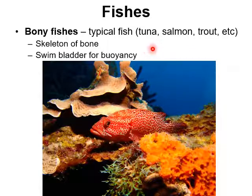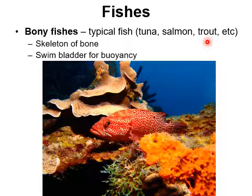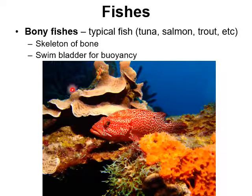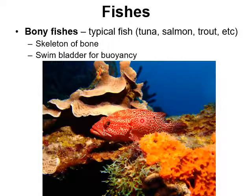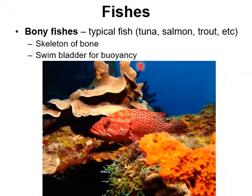The bony fishes are what most people picture when they think of 'fish' — tuna, salmon, trout, marlin, swordfish, bass, grouper. Their skeletal system is made of bone. They also have a unique feature the other fish groups lack: a swim bladder, an internal pocket they can pump air into or release air from, allowing them to control their buoyancy — pumping air in makes them rise, releasing air makes them sink.